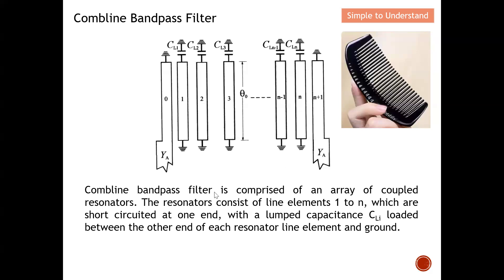The comb line band pass filter is comprised of an array of copper resonators. The resonators consist of lumped elements from one to n — all the array of resonators are short-circuited at one end. On the other end, we have lumped capacitors. So we have different lumped capacitors before they go to the short circuit — this is how the comb line band pass filter looks.